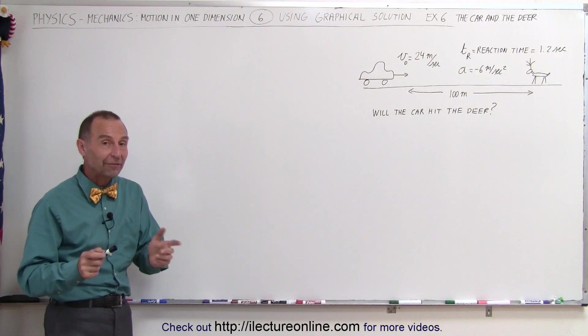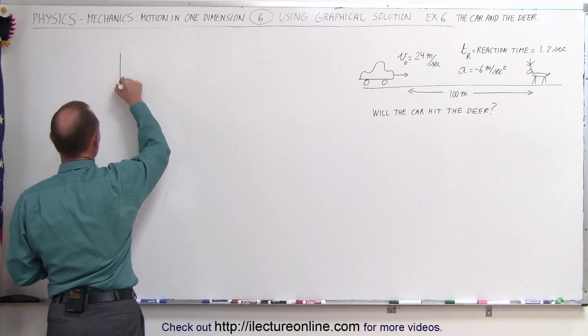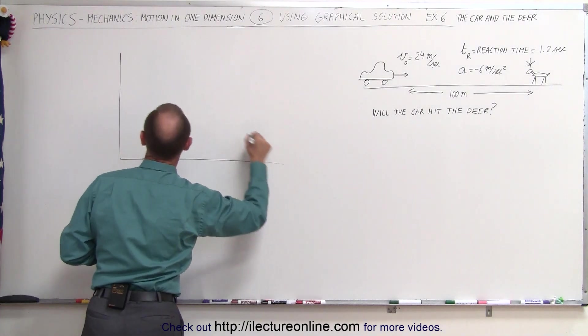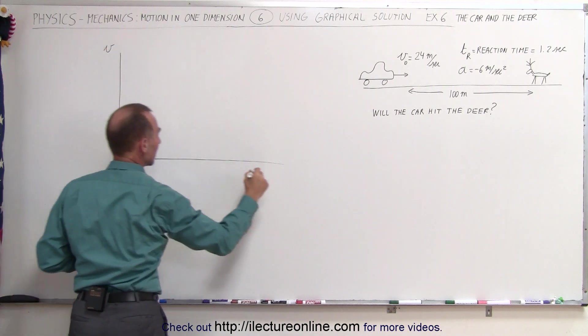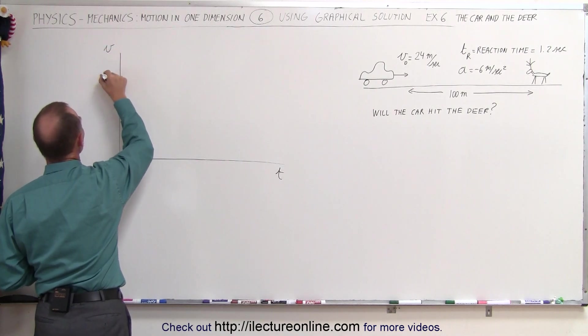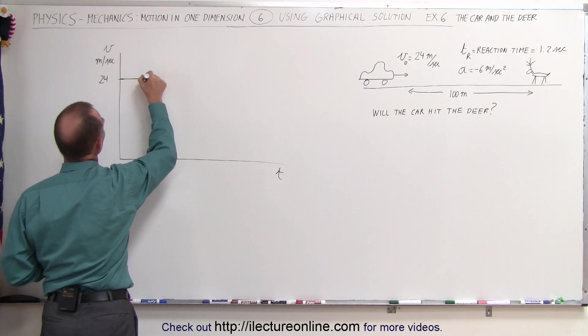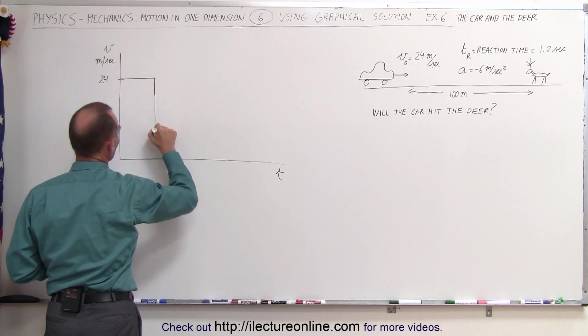We're going to solve this using the graphical technique. We'll graph a velocity versus time graph. The car is moving at 24 meters per second and doing so for the first 1.2 seconds.